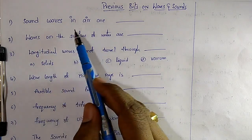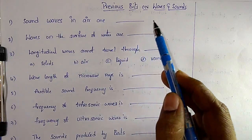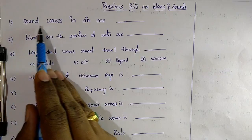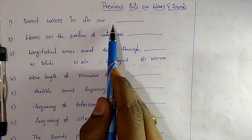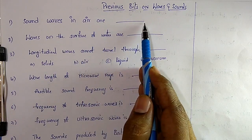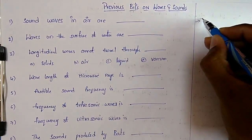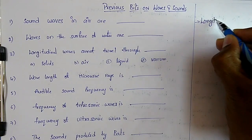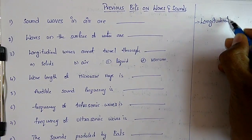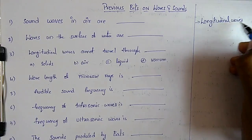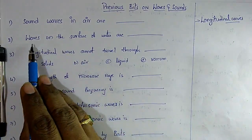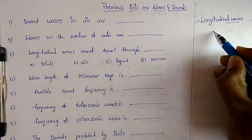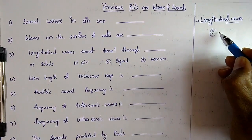This is previous bits on waves and sounds. Question 1: Sound waves in air are nothing but longitudinal waves. Question 2: Waves on the surface of water are nothing but transverse waves.